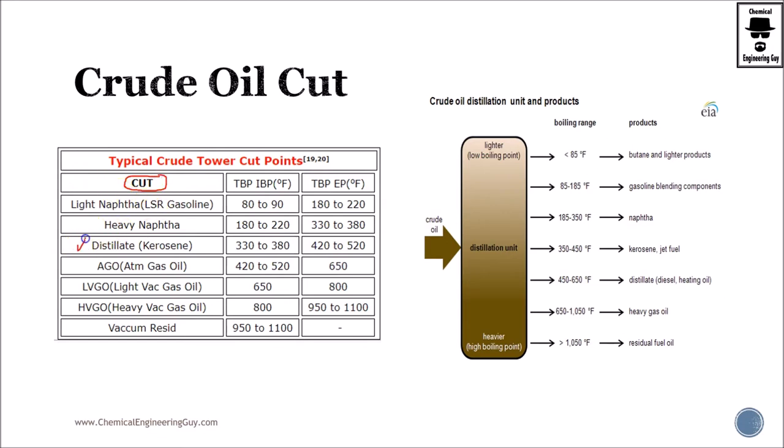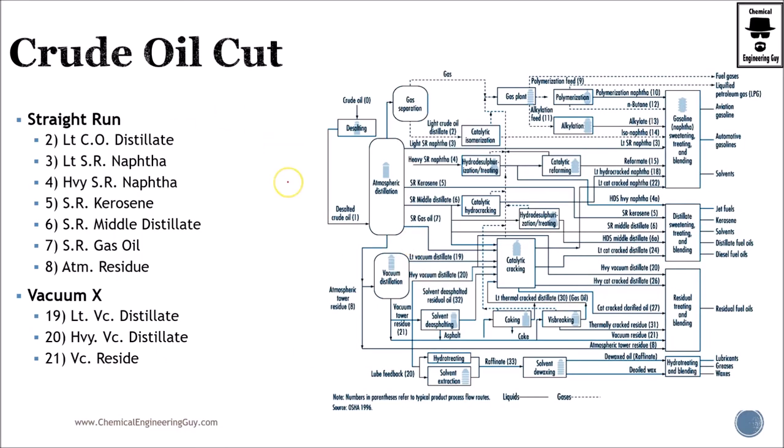So more on crude cuts. You already hear this: cut light naphtha, heavy naphtha, distillate, atmospheric gas oil, and so on. Similar temperatures. This is another diagram I wanted to show you. We got the straight run and the vacuum run. So try to identify all these materials. LT stands for light, HVY stands for heavy, and SR, which is actually presented most of them, is straight run.